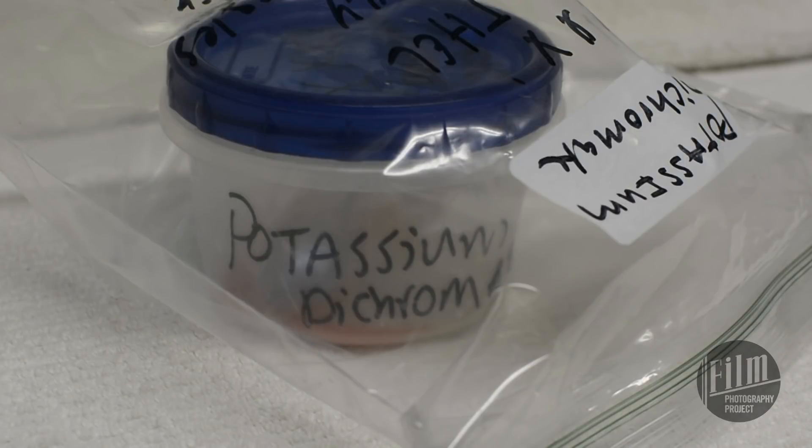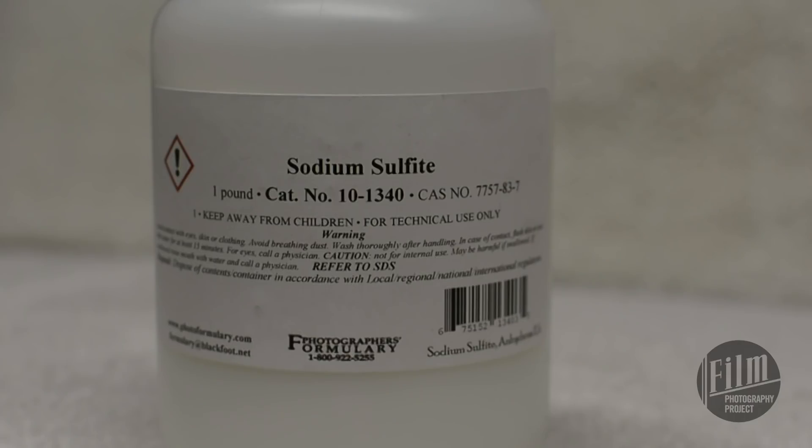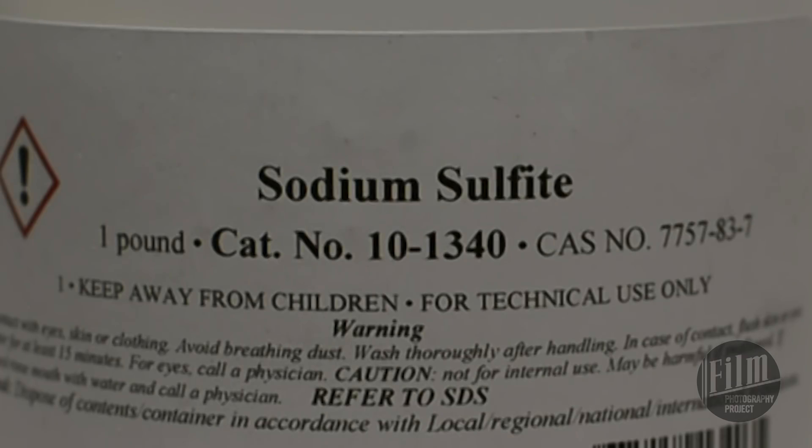Then there's the bleach. This is dichromate bleach, not the stuff you use in your laundry. Dichromate is very dangerous and caustic, especially in powdered form. Next comes the clearing bath. It's a solution of sodium sulfite anhydrous and water.